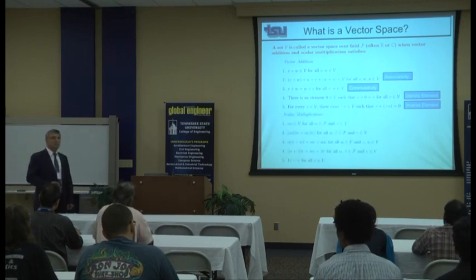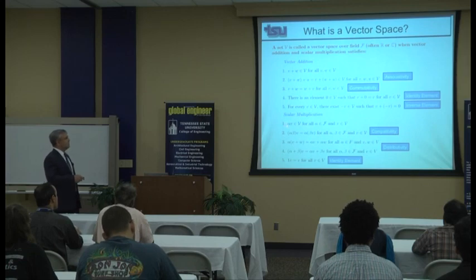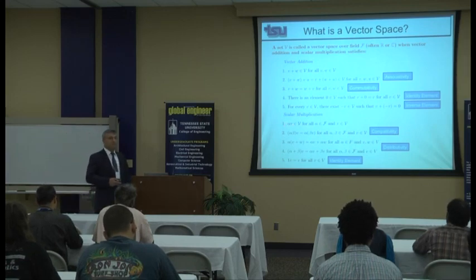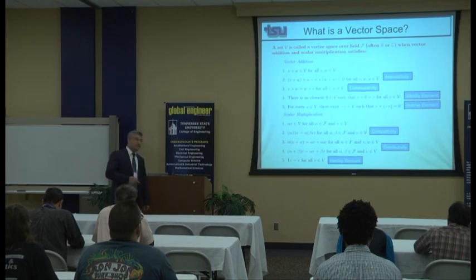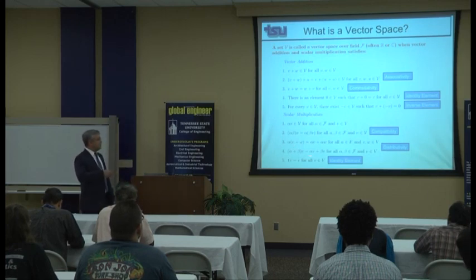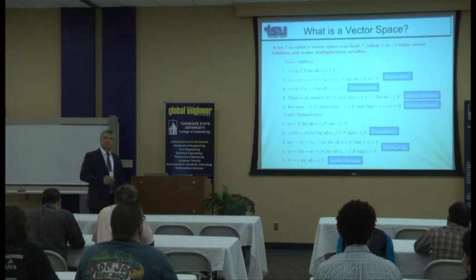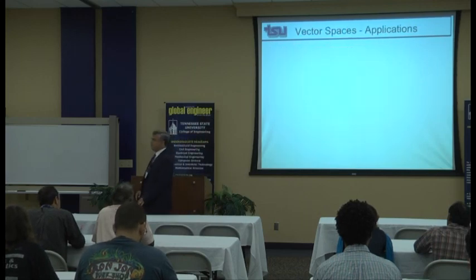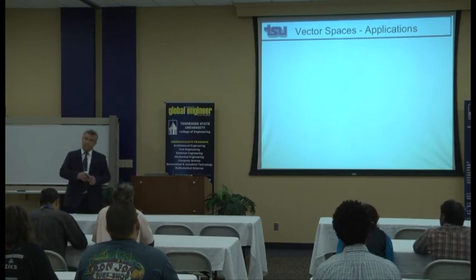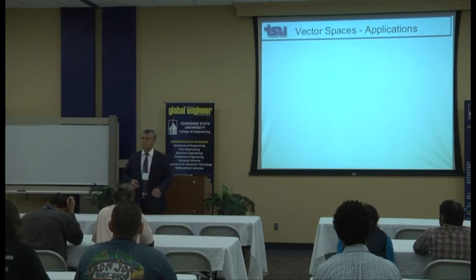Similarly, there are five properties for scalar multiplication: closure — multiplying a vector by a scalar gives a vector in the space; compatibility; two distributivity properties with respect to vectors or scalars; and an identity element with respect to multiplication shown by one. The identity element with respect to addition is shown with zero, while for multiplication it is one. I want to motivate you to think beyond Rn or R3 in a wider sense.